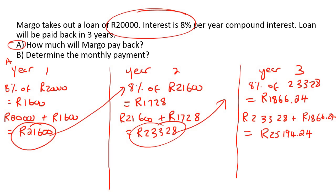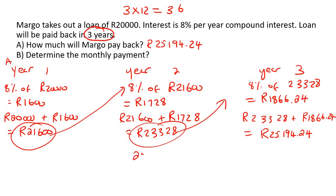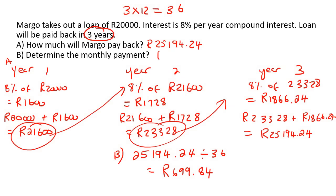So that's only for question A — that is the total that Margo should pay back: 25,194.24. Now to work out the monthly payment — very easy. In three years, that would be 3 times 12, because there's 12 months in a year, so that's 36 months. So we will just say the total, 25,194.24 — this is for question B — we're just going to divide that by 36, and that'll give us 699.84. So that's our answer: 699.84.